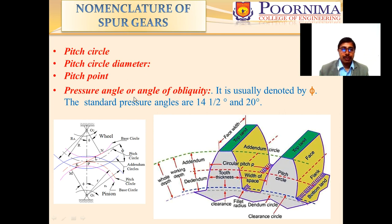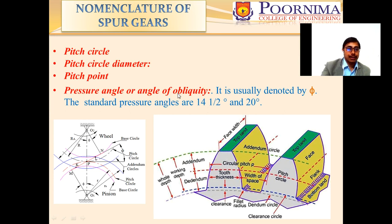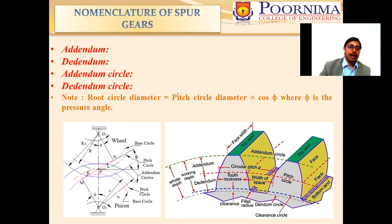The pressure angle, or angle of obliquity, is the angle between the common normal to the two gear teeth at the point of contact and the common tangent at the pitch point. It is usually denoted by phi (φ). The standard pressure angles are 14.5 degrees and 20 degrees.